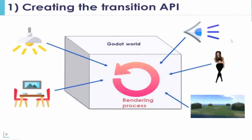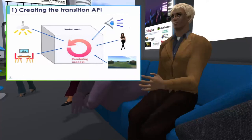For our first goal of creating the transition API, our goal is to keep the changes to the Godot engine to a minimum so we can use most of its functions and allow future upgrades. We decided to create a world inside of Godot into which we would transfer all the visual elements from SceneGate, such as the lighting, the objects, and the terrain, and let Godot's rendering engine take care of the work through its rendering process.